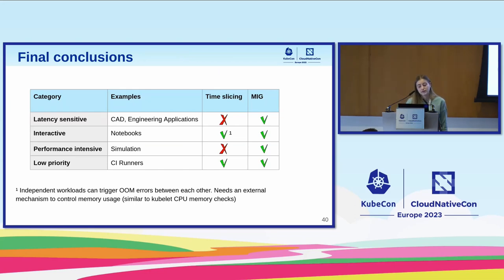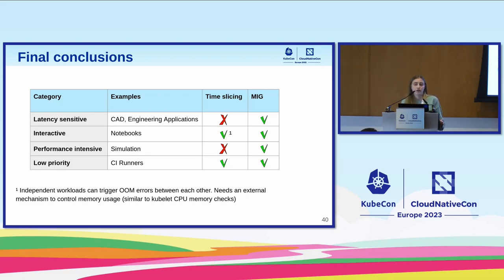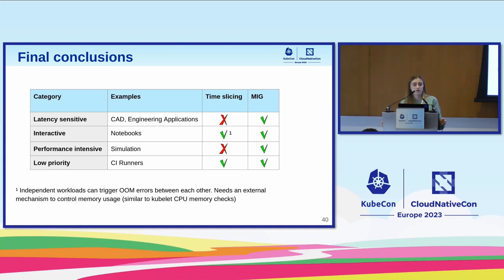Final conclusions: MIG is very cool and suitable for many scenarios because it gives users the feeling they're the only one using a full GPU, without caring about other users. With time slicing, that's not the case. Time slicing is very good when you have a lot of idle time and low-priority jobs that can run longer. But if you use time slicing for users with a lot of idle time, you need to add some kind of memory management procedure, because you don't want what happened with Mr. Orange to happen again in production. Don't use time slicing for anything latency-sensitive or performance-intensive — the context switching penalty is very large.